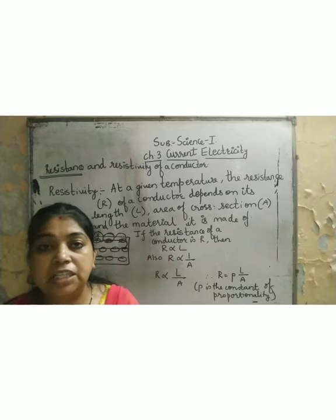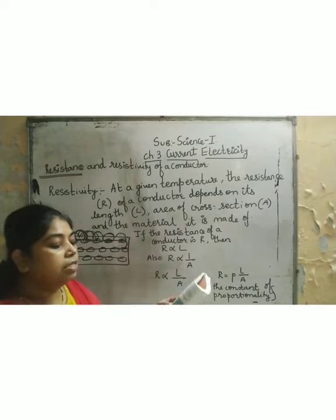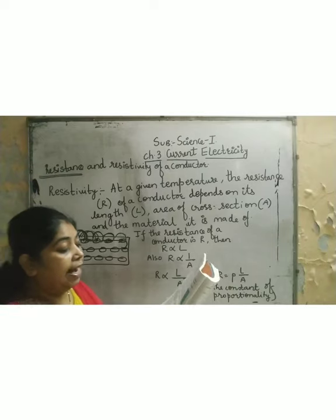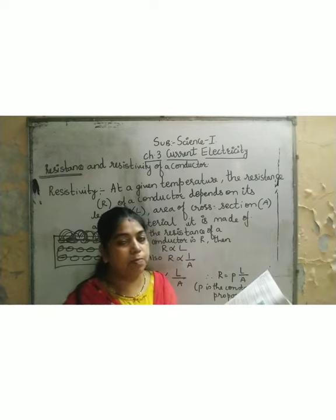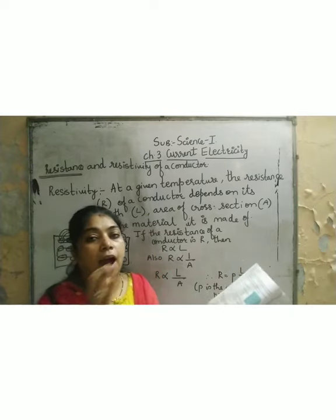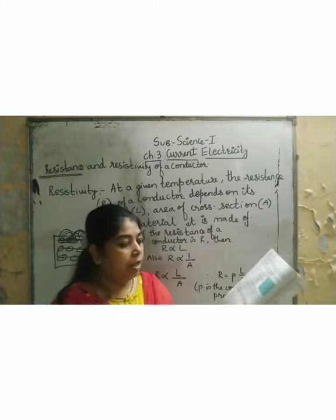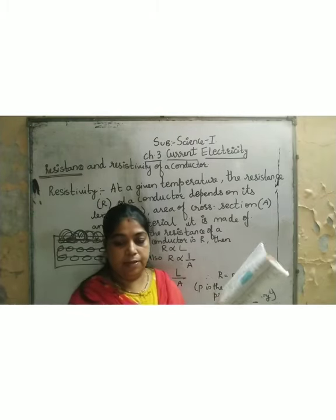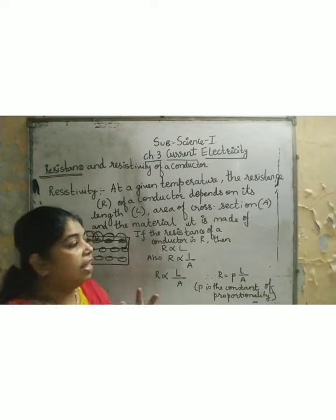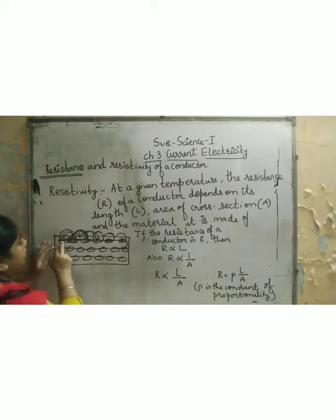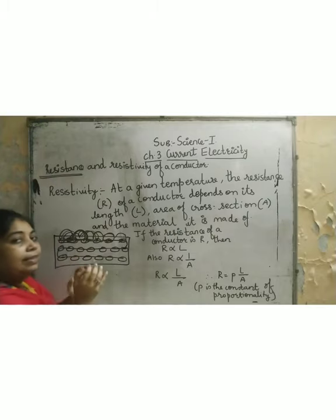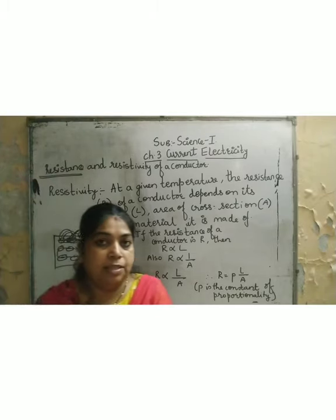Open your textbook on page number 34 — there is a little introduction there on resistance and resistivity of a conductor. A conductor is the material which carries the current. As shown in figure 3.4, there are a large number of free electrons in a conductor constantly in random motion. They have high potential, and when the current is applied, they start moving in one direction, and when they are moving, they get collided.